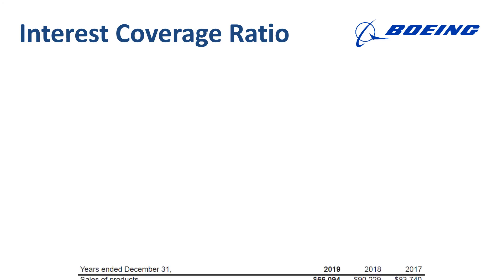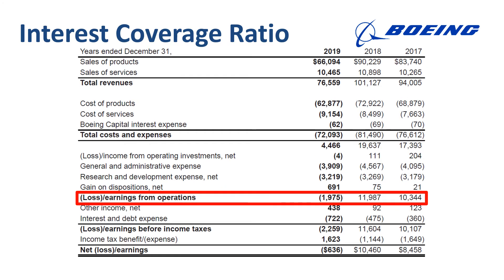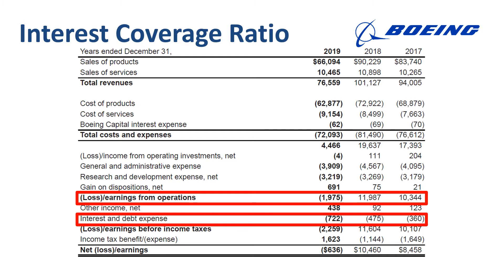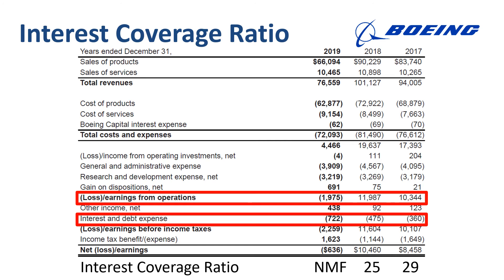Boeing has operating income for 2018 and 2017, but an operating loss for 2019. Each of the three years has interest expense, so we can calculate the interest coverage ratio of 29 for 2017 and 25 for 2018. But due to the operating loss — negative operating income — in 2019, the interest coverage ratio cannot be calculated. Boeing had a very difficult year in 2019, which is exactly the year for which we want to test its financial health, but the interest coverage ratio cannot provide any information.